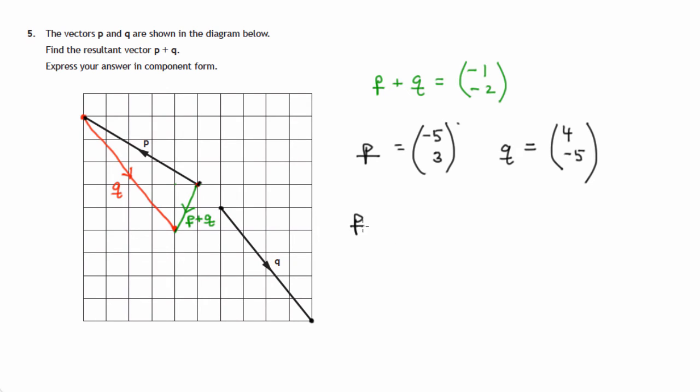So the resultant vector P plus Q would be the sum of these two vectors, components of these vectors. And to add components, we add corresponding components. So negative 5 plus 4 would be the x component, and 3 plus negative 5 would be the y component.